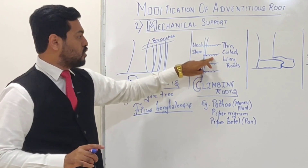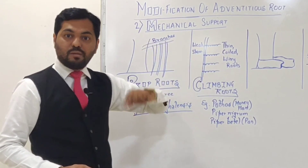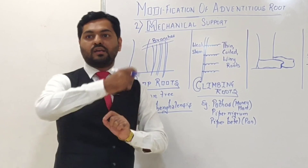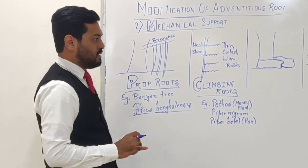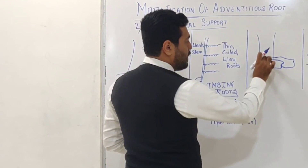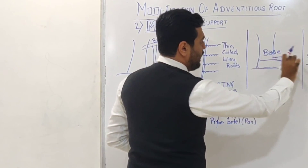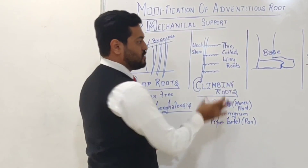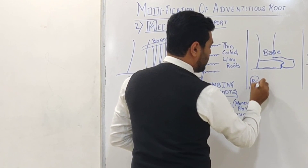To confirm whether it is a root or a stem tendril: if it is a root, it will not have nodes or internodes; if it is a stem tendril, it will have nodes and internodes, or it will be produced from parts of the stem. This differentiating feature is important for MCQs. The third type of root for mechanical support is where plank-like wooden structures develop from the base of the plant — these are called buttress roots.